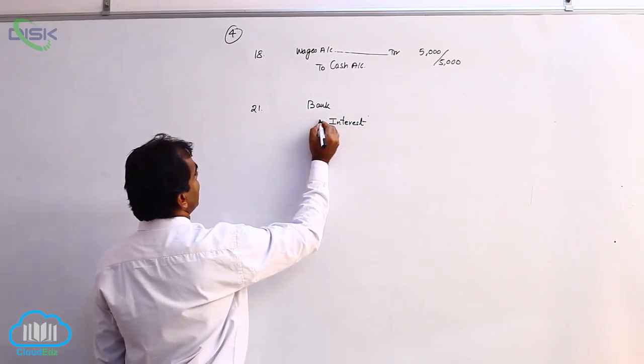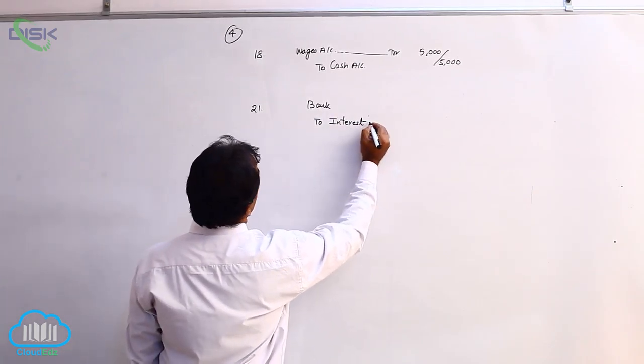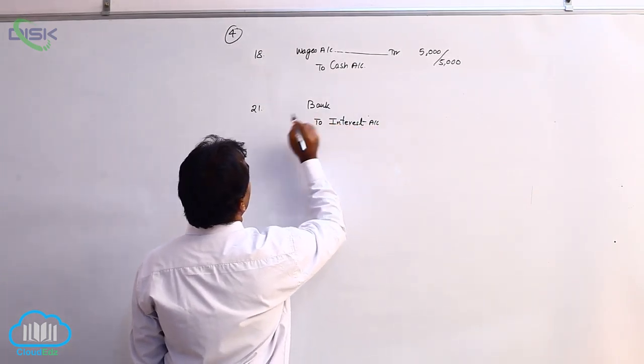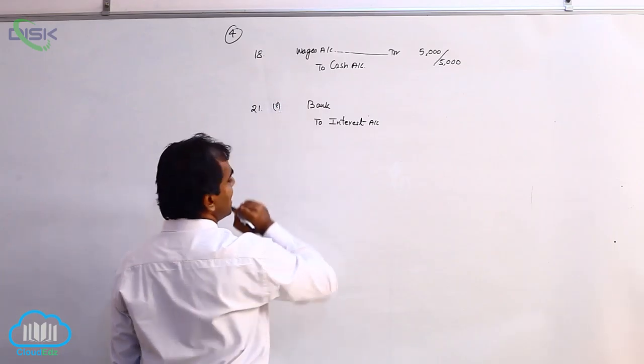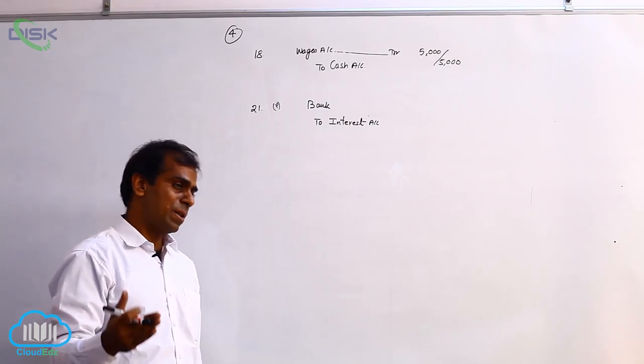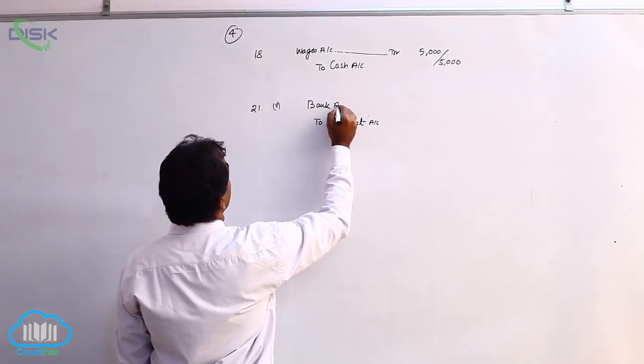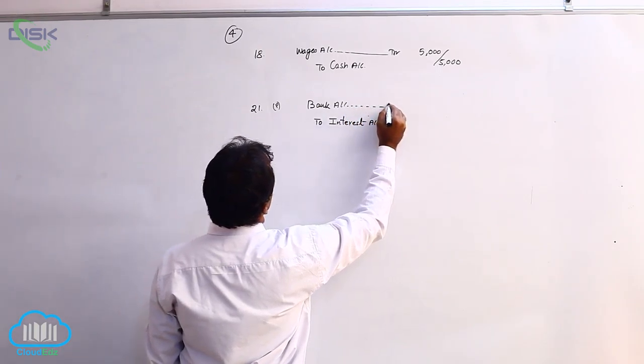Interest is income for us, being nominal account we have to credit interest account. Bank is a personal account. Ultimately it is bank which is going to collect this money and put in our account as interest. So bank would be the receiver initially. Therefore we are debiting the bank based on personal account rule.